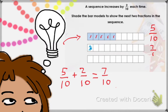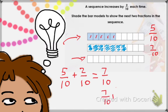Shading the next bar model: 1, 2, 3, 4, 5, 6, and 7. For my next bar model, I need to add again 2 over 10. So 7 over 10 increased by 2 tenths: 7 plus 2 equals 9 over 10. So our third fraction is 9 over 10.